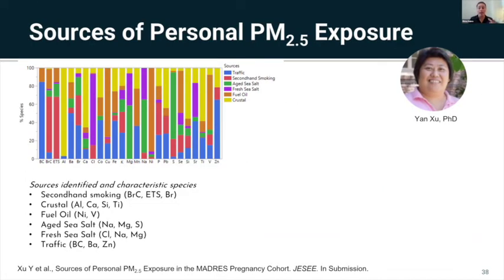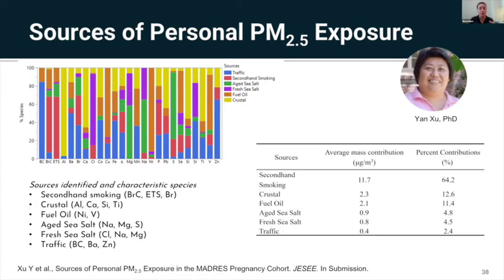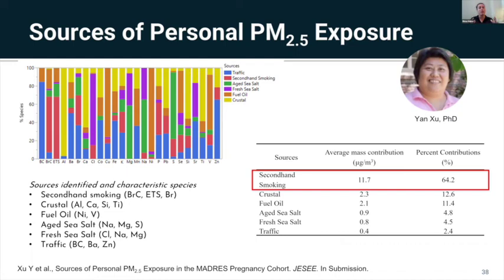Yan has also taken the Teflon filters analyzed for chemical information and done source apportionment analyses, starting to see major sources contributing to personal exposures based on chemical fingerprints. Secondhand smoking is contributing more than half of personal PM2.5 exposure in these pregnant women — surprising given that our study design heavily tried to avoid measuring women with active smokers in the home. Despite all efforts, secondhand smoke is still a very prominent exposure, and pregnant women may not even realize they're getting that much exposure.